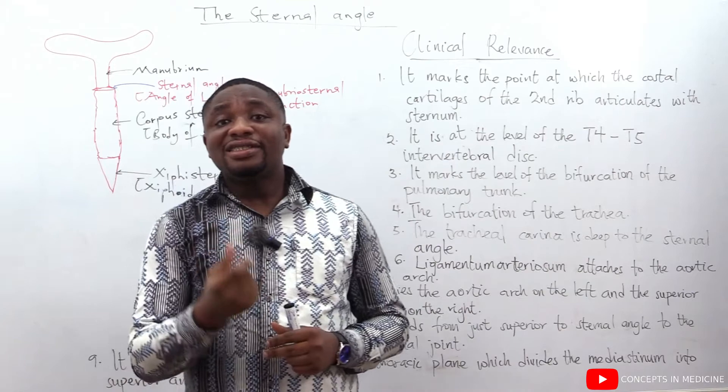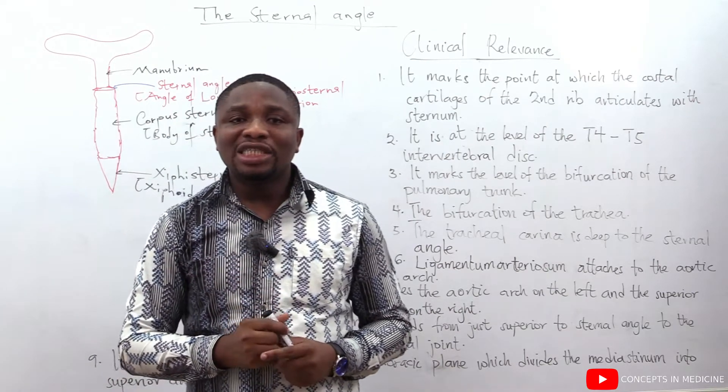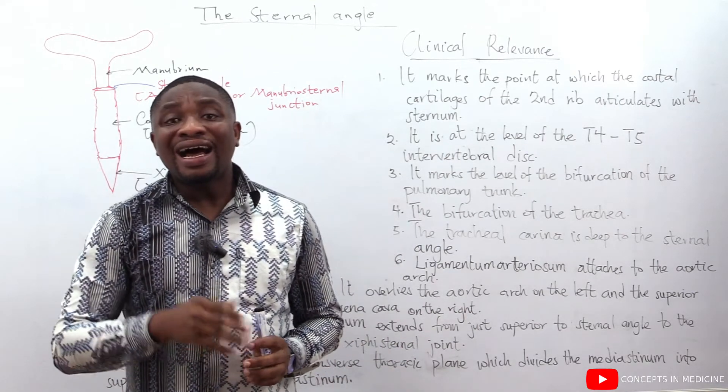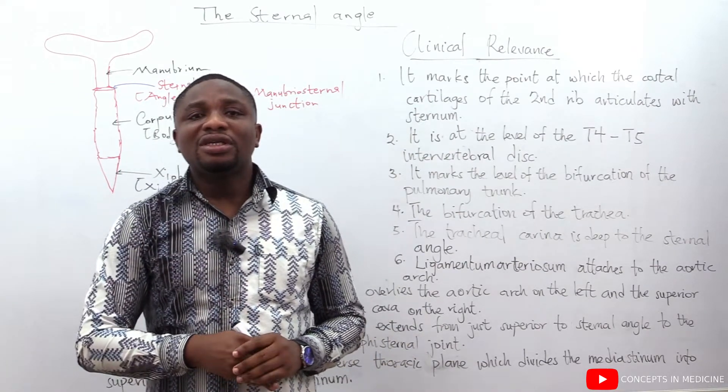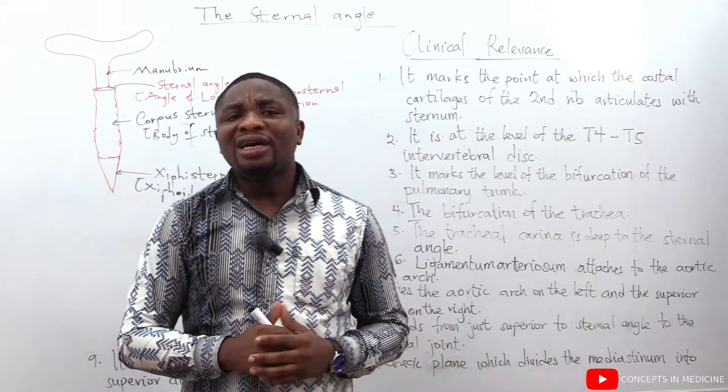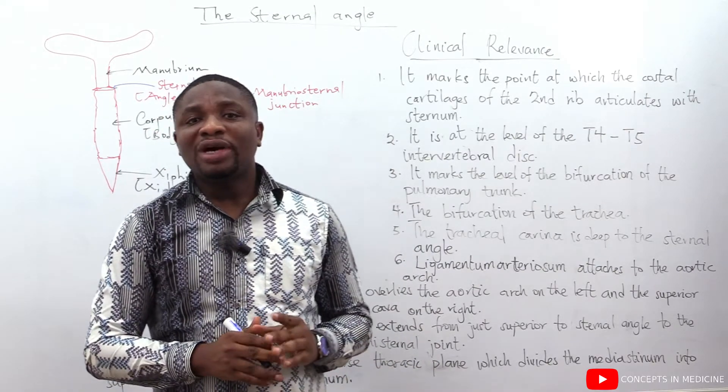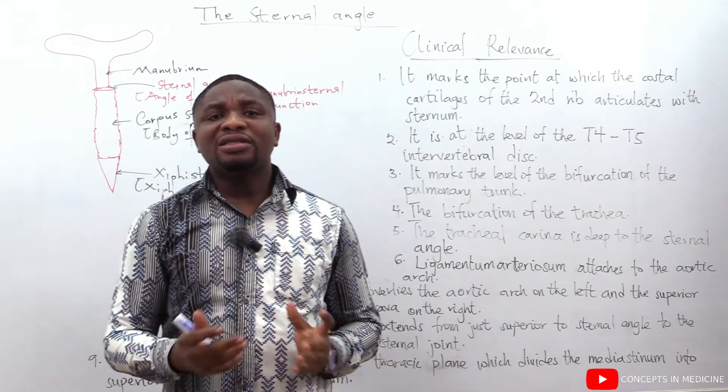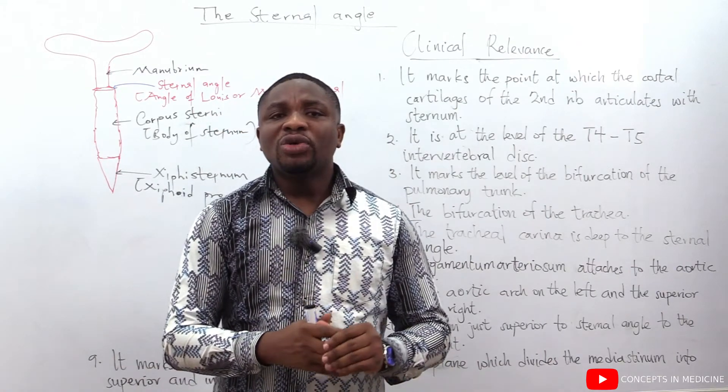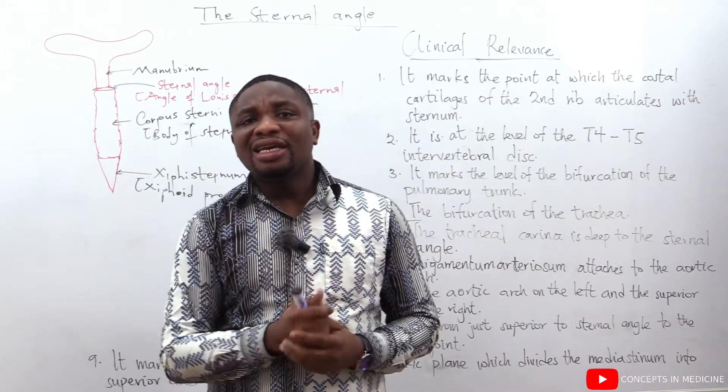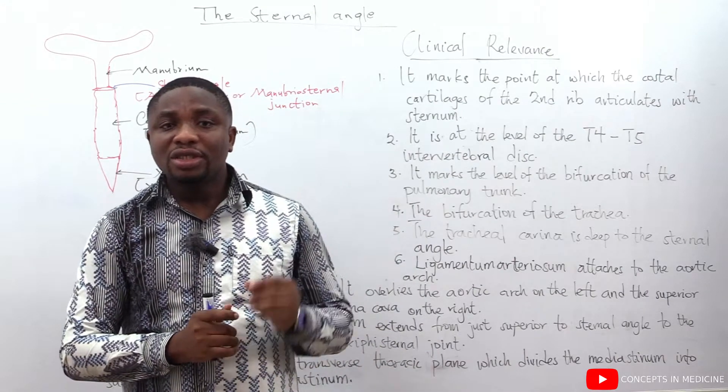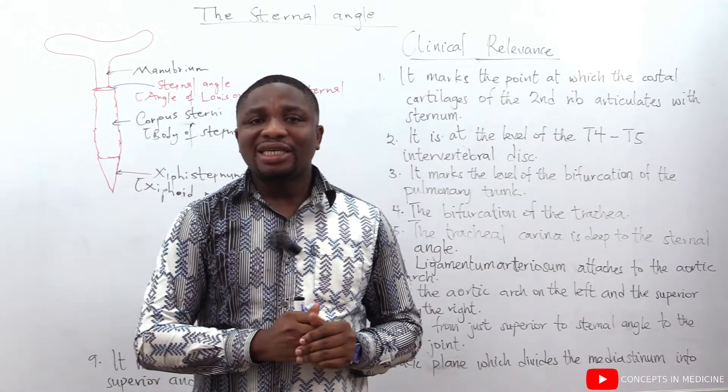For example, if an incision is made at the first or second intercostal space, there is a high tendency of causing damage to the large blood vessels as well as the brachial plexus. That is why the knowledge of the sternal angle is very important so as to count the ribs appropriately as to land in the appropriate intercostal space during a thoracic incision.